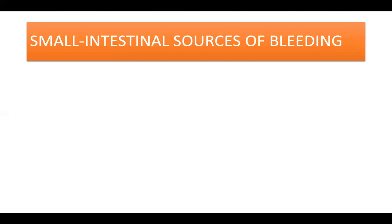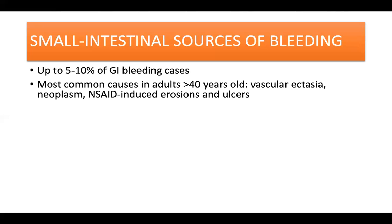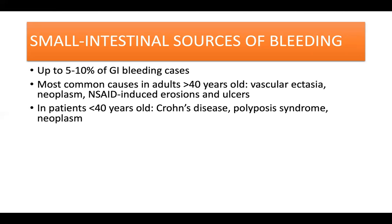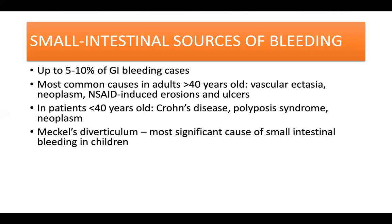Patients without a source of GI bleeding identified on upper endoscopy and colonoscopy were previously labeled as having obscure GI bleeding. With the advent of improved diagnostic modalities, approximately 75% of GI bleeding previously labeled obscure is now estimated to originate in the small intestine beyond the extent of a standard upper endoscopic exam. Small intestinal bleeding may account for up to 5% to 10% of GI bleeding cases. The most common causes in adults over 40 years old are vascular ectasia, neoplasm, and NSAID-induced erosions and ulcers. In those under 40 years old, causes include Crohn's disease, polyposis syndrome, and neoplasm. Meckel's diverticulum is the most significant cause of small intestinal bleeding in children.